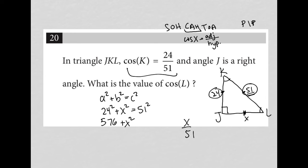Plus X squared equals, and then what is 51 squared? That is 2,601. So I'm going to just subtract 576 from both sides. And I get X squared is equal to 2,601 minus 576, which is 2,025.